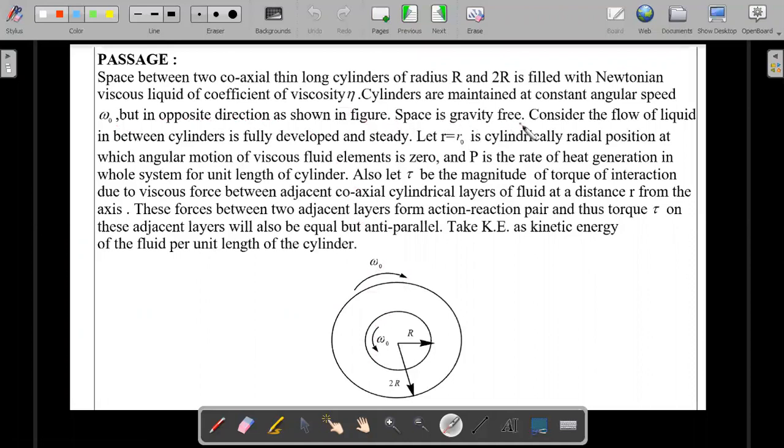Space is gravity free. Consider the flow of liquid in between cylinders is fully developed and steady. Let r = r₀ be the cylindrical radial position at which angular motion of the viscous fluid elements is zero. That means you start from here to here, different positions will have different angular velocities. He is talking about one such position where the angular velocity could be zero that he is representing for the question as r₀.